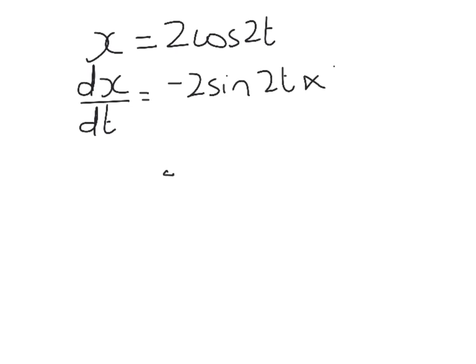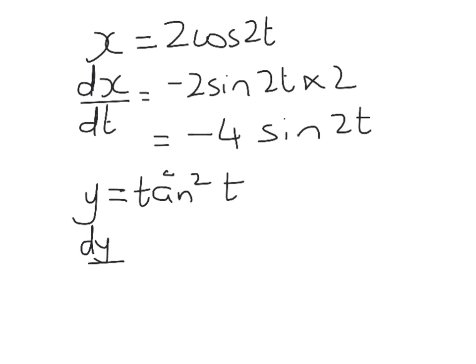So x = 2cos(2t), dx/dt will be -2sin(2t)×2, which is -4sin(2t). y = tan²(t), so dy/dx, using the chain rule here, is going to be 2tan(t) times the derivative of the inside function, which will be sec²(t).